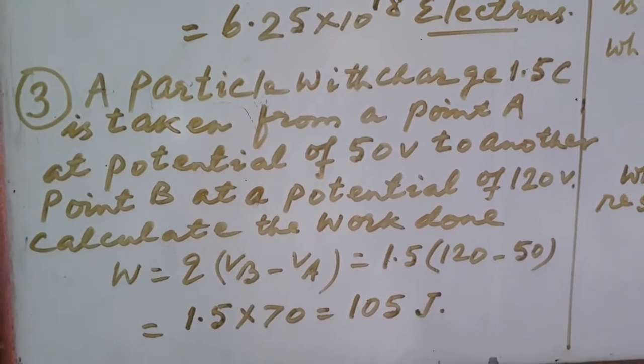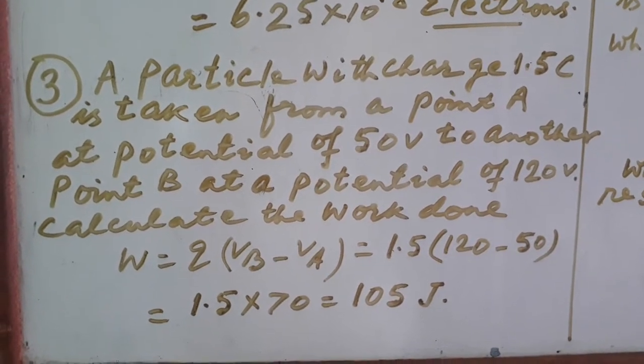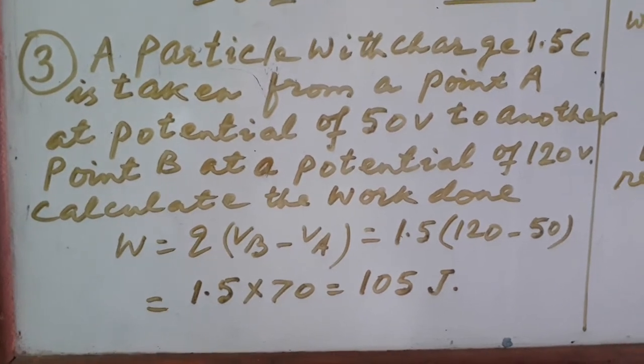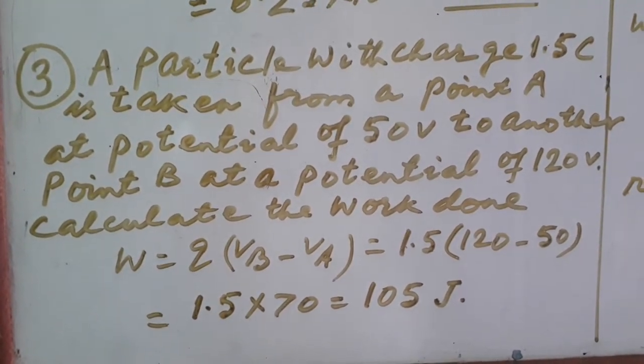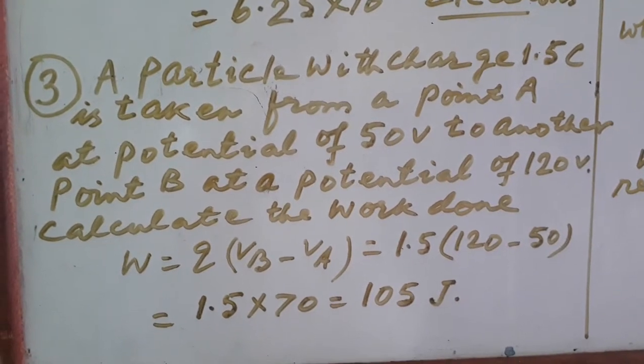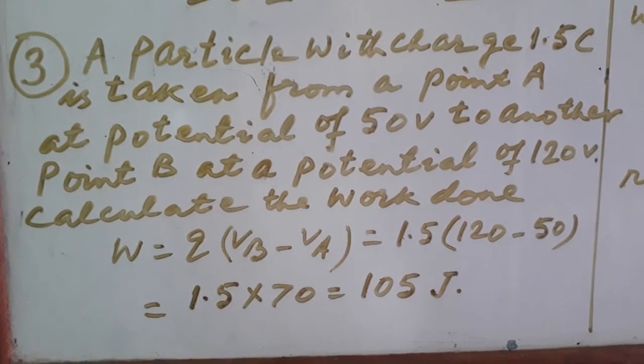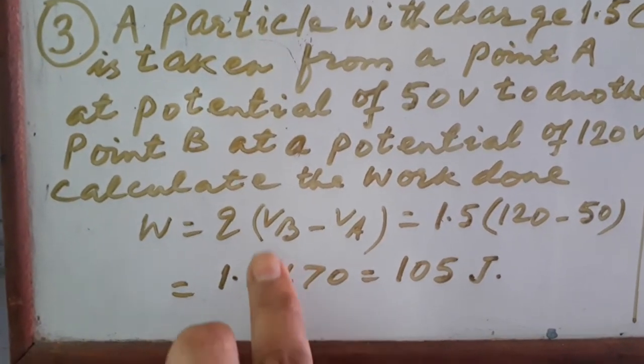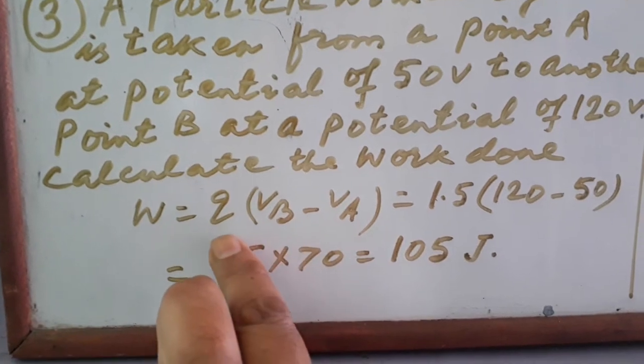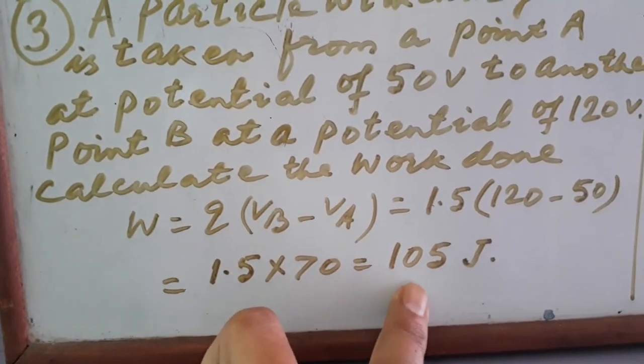You already know the formula of work done: W equal to QV where V is the potential difference. Here we have to take the difference because 1.5 coulomb is taken from point A to point B. Point B is at higher potential. So taking the difference as VB minus VA and putting the value of Q, VB and VA, you will get your answer.